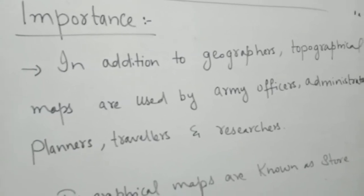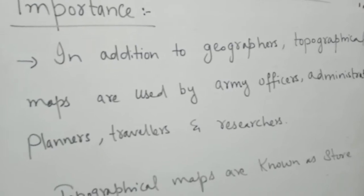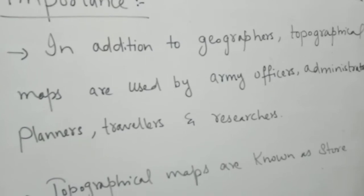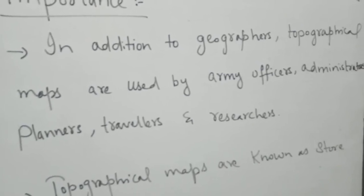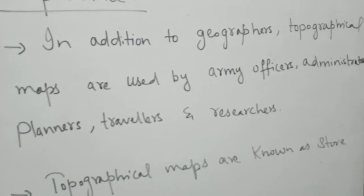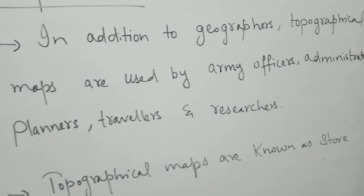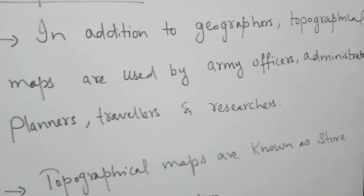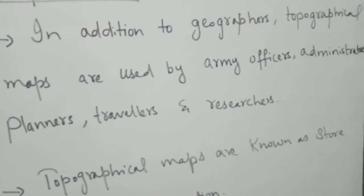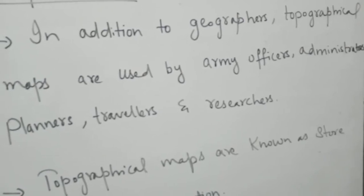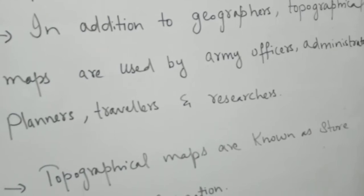Right after the definition and its main purpose, the point comes: the importance and uses of the topographical map. Topographical maps are extensively used to understand both physical and cultural features, because these maps are constructed using large scales so everything is shown in detailed manner. The first important use is that they are not only used by geographers but also by different specialist persons like army officers, administrators, planners, travelers, and researchers. Any field that needs area, place, or space information will definitely use the topo sheet.